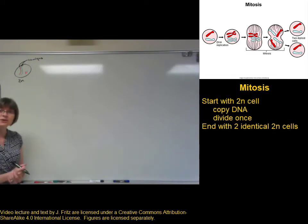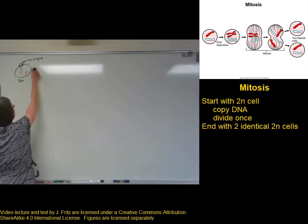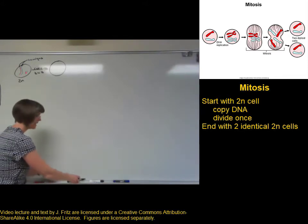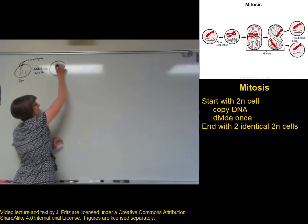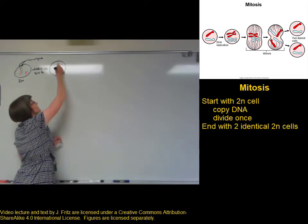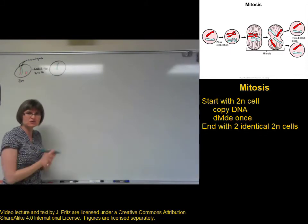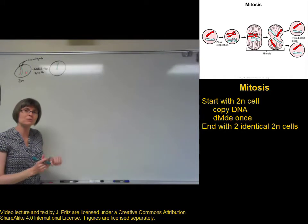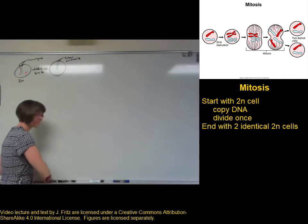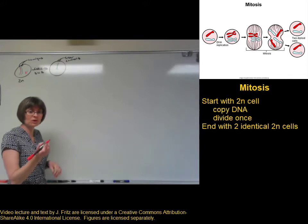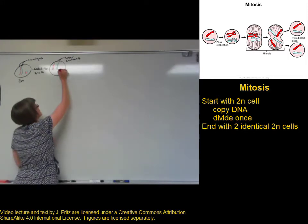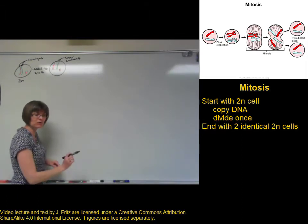When we go to copy this cell, first we have to copy the DNA. To do this, we're going to make an identical copy of each chromosome. Here's the original long chromosome from my dad, and we're going to have an identical copy — another long chromosome just like this one. These two identical copies stay associated with each other for a little while, and we call these the sister chromatids. I also need to have an exact copy of the long chromosome from mom, an exact copy of the short chromosome from mom, and an exact copy of the short chromosome from dad.